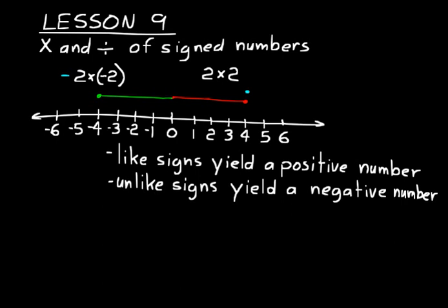Division of signed numbers is a little more complicated to describe compared to multiplication. Compare multiplication and division to addition and subtraction, which are inverse operations — three plus two equals five, and subtracting two gets you back to three. Likewise, multiplication and division are inverse operations: three times two equals six, and dividing by two gets you back to three. They have similar properties.